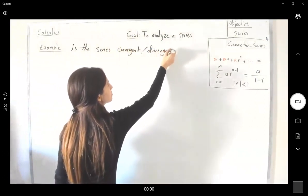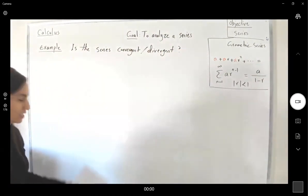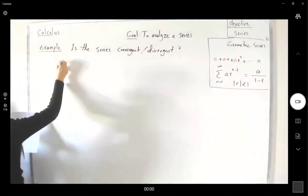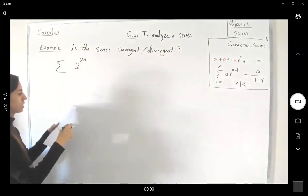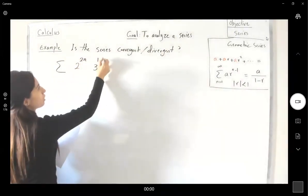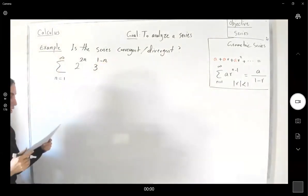Convergent, divergent. If it's convergent, we always want to find the sum. So let's take a look at this series. The series that we have is 2^(2n) times 3^(1-n), and it starts from n=1 and goes to infinity.